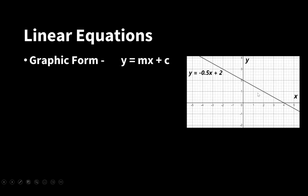The slope of the line is represented by the coefficient m, a constant value, and the y-intercept is represented by c, also a constant value.